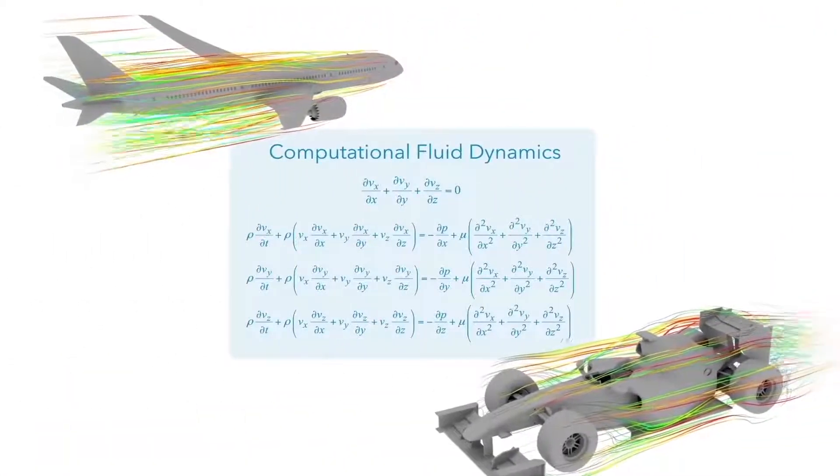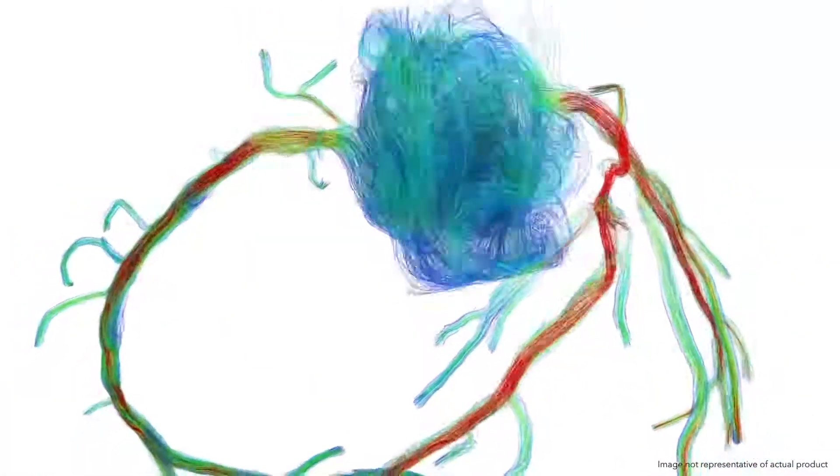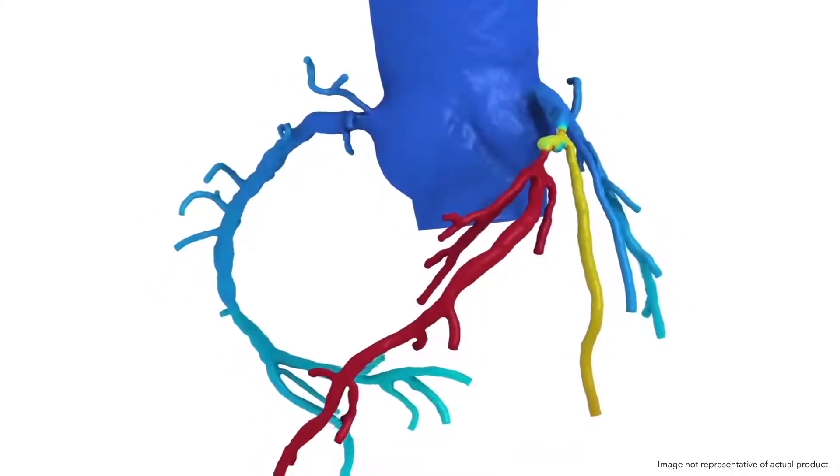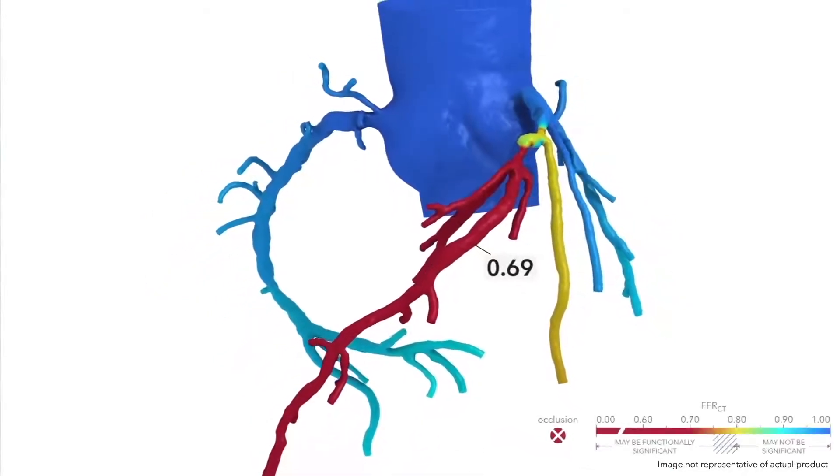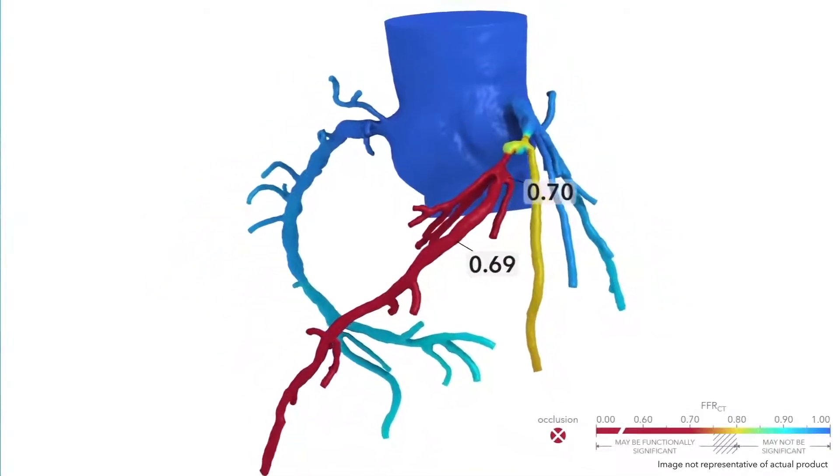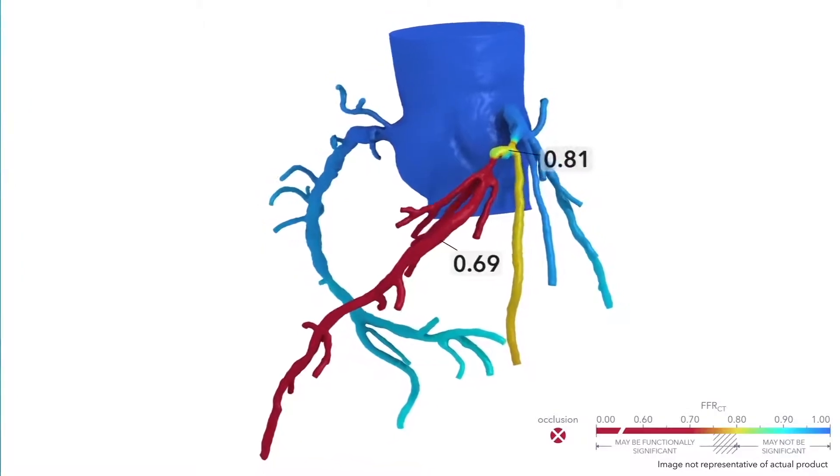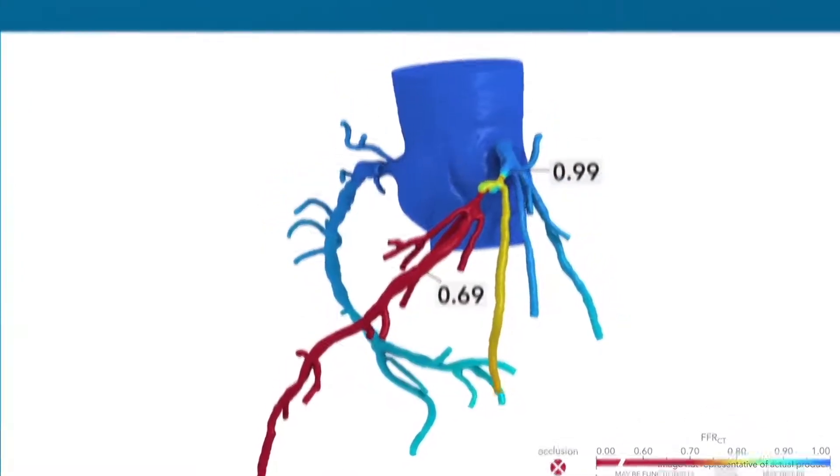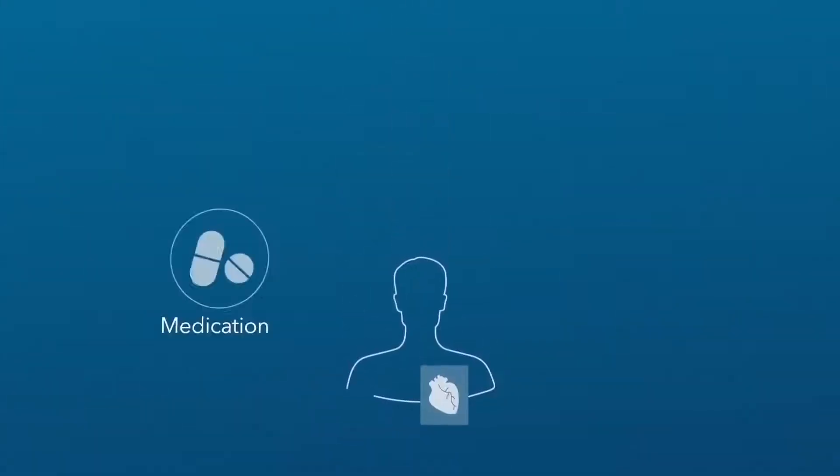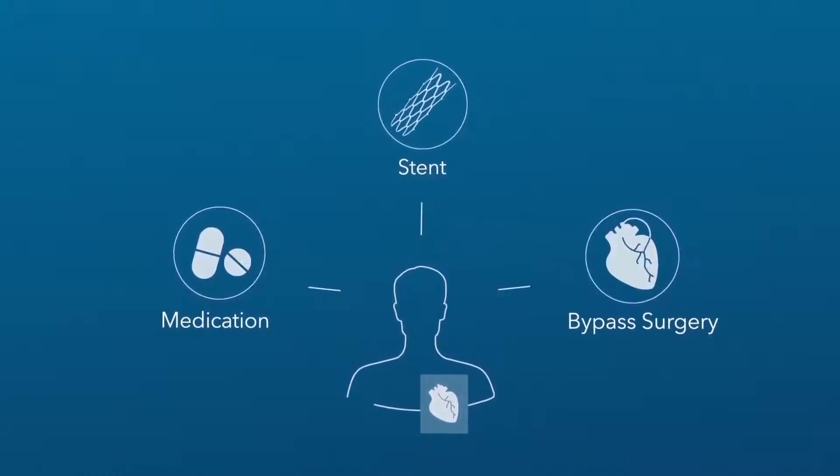Next, the scientific principles of computational fluid dynamics are applied to model the complexities of fluid flow. The end result of the HeartFlow Analysis is a color-coded map of the coronary arteries, showing the extent to which any narrowings are disrupting blood flow. A physician can use this information to develop a treatment plan that is right for that patient.